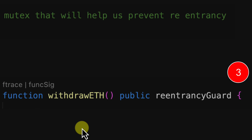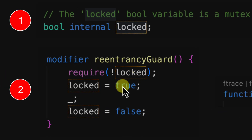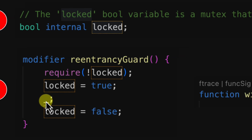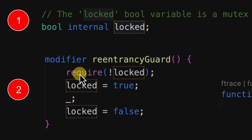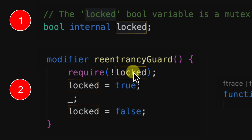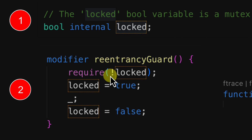Somewhere in the execution there will be an external call that could hook the malicious contract of a hacker trying to attack the contract. If the hacker tries to re-enter `withdrawETH`, the `reentrancyGuard` modifier runs again on the second entrance. This time, the require statement fails because `locked` is now true, so the transaction will be reverted. The hacker cannot re-enter the same function twice.